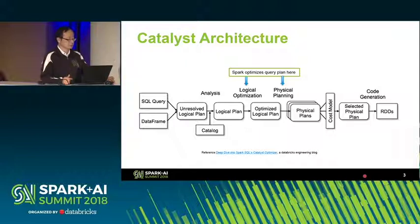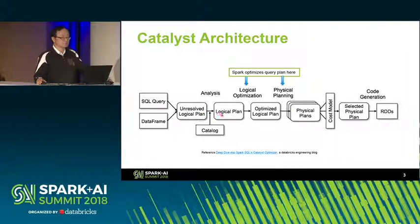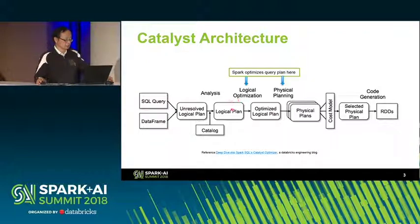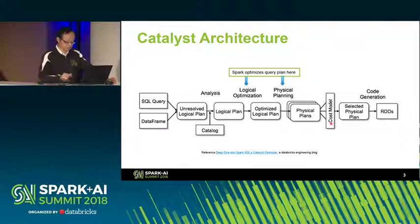This is the Spark SQL Catalyst architecture. A user can submit either a SQL query or an application program using the DataFrame API. The input will be converted into an unresolved logical query plan. With catalog information, the analyzer component converts it into a logical query plan. Then the logical query optimization component kicks in and converts the unoptimized logical plan to an optimized logical plan. Next, physical query optimization transforms it into a physical query plan, and we choose the best physical plan to send to the execution engine.